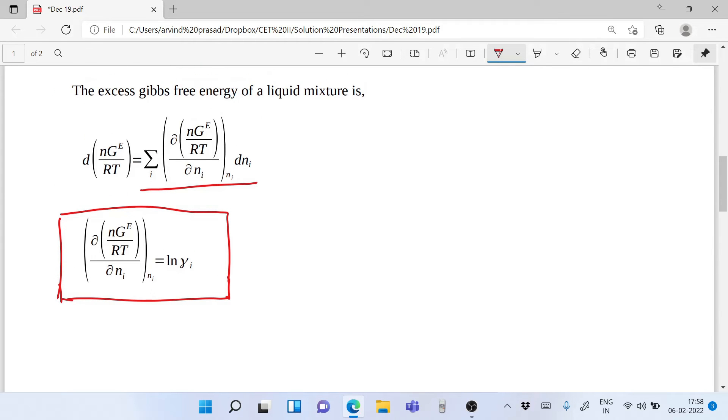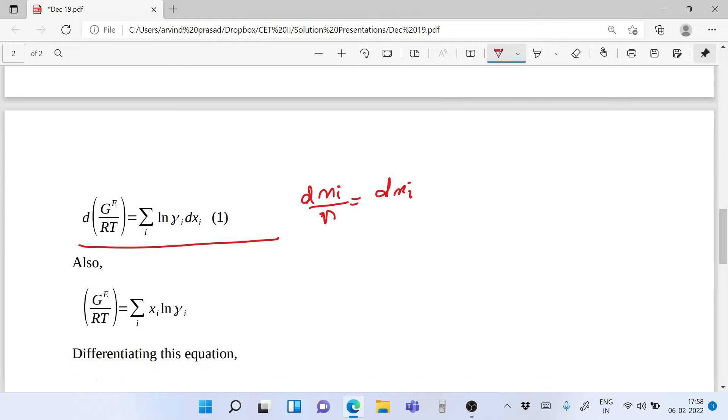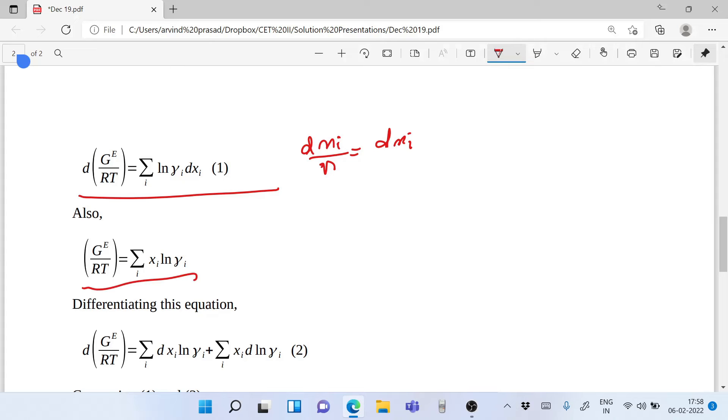We need to remember that this definition - partial NGE by RT by partial Ni holding NJ constant - is defined as the activity coefficient of any component I in a liquid. From that definition, we get d(NGE by RT). In this equation, we write this as ln gamma I and this is dNi, which comes from here, and we divide it by N. We can write it as d(N DGE by RT) equals summation of ln gamma I dXi because dNi by N is going to be dXi.